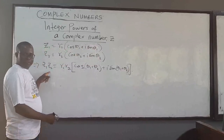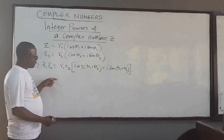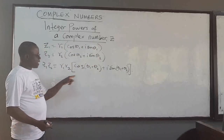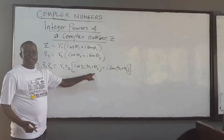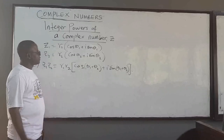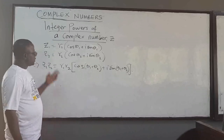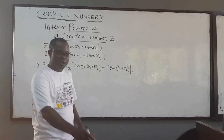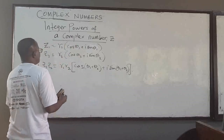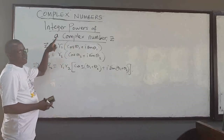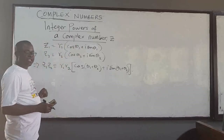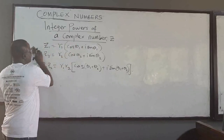If it is z₁ over z₂, we have r₁ over r₂, but in that case the argument is the difference between the arguments. We want to use this idea to establish some very important relationships concerning integer powers of the complex number.